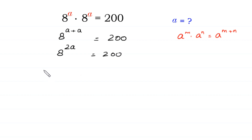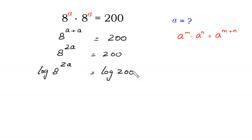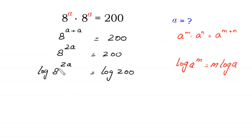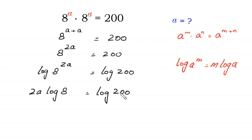Now from here we take common log of both sides. Log of 8 to the power 2a is equal to log of 200. According to this log property, log of a to the power m is equal to m times log of a. We can write this as 2a times log of 8 is equal to log of 200.